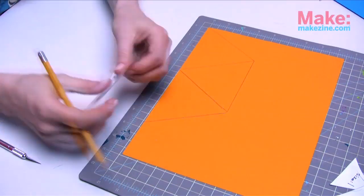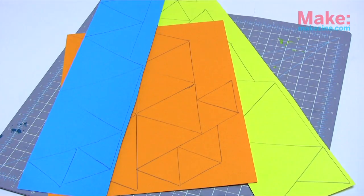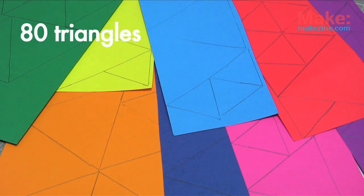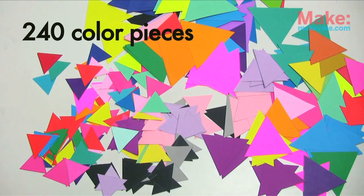Keep tracing and cutting your colored cardstock until you have a color for each side of each triangle. That is three times the amount of triangles you have, so with my 80 triangles I needed 240 color pieces.